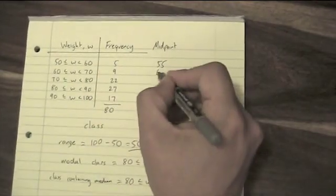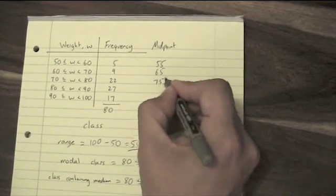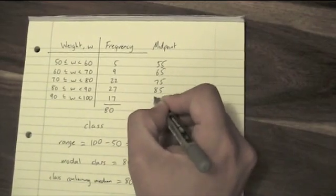Next row, the midpoint is 65, then 75, then 85, then 95. So now I've got what is essentially a normal frequency table.